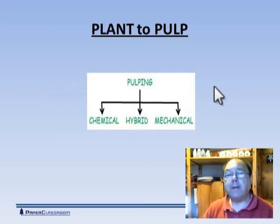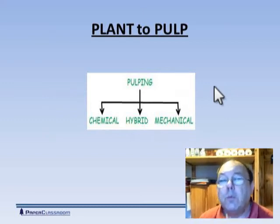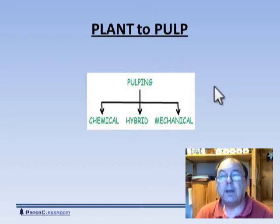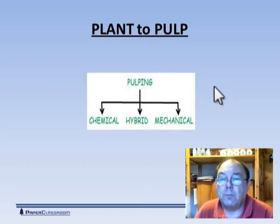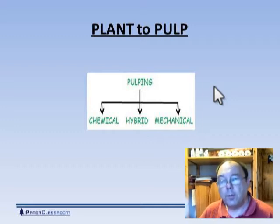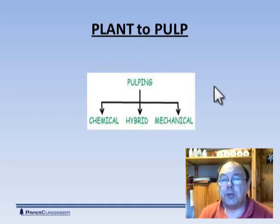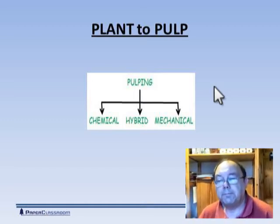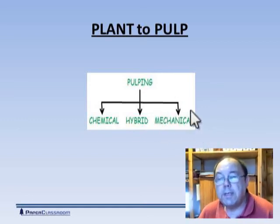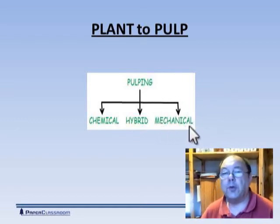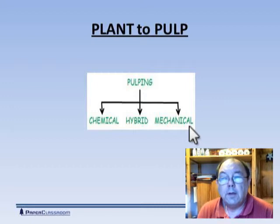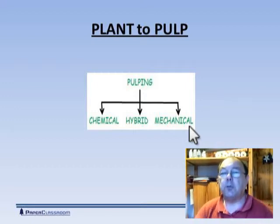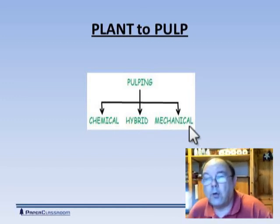How do we get from the tree to the individual fibre? We do that by a process called pulping. Generally speaking there are three versions of pulping. There's chemical pulping — the most modern — which involves chopping the tree into little chips, then stewing them in chemicals under high temperatures and pressures. The very first method was mechanical pulping, where the original process involved taking the log and pressing it against a great big grindstone to produce what's called a groundwood pulp.